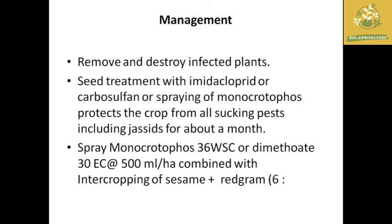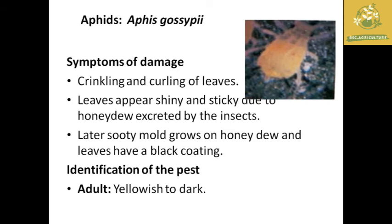Management of leaf hopper includes removing and destroying infected plants from the field. Seed treatment with Imidacloprid or Carbofuran and spraying of Monocrotophos to protect against sucking insects for the first month after sowing. Also, spray Monocrotophos 36 WSC or Dimethoate 30 EC at 500 ml per hectare. Intercropping sesame with red gram at the ratio of 6:1 is also effective.